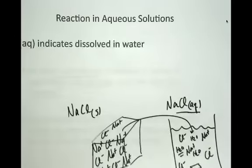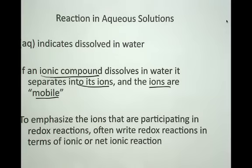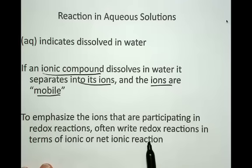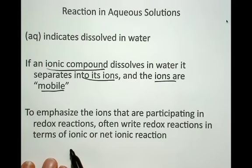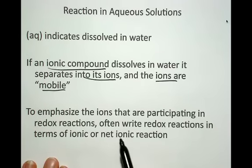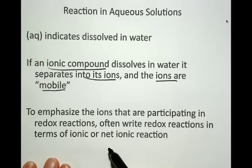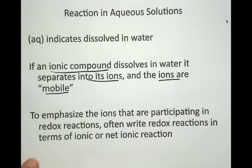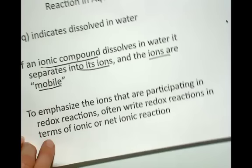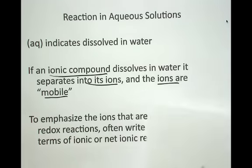To emphasize this, I need to tell you that we often write redox reactions in terms of the ionic or net ionic reaction because we're emphasizing what's participating in the redox reaction. Sometimes certain species do not participate in oxidation-reduction, and in that case, they're often left out. I don't want that way of writing things to confuse you.